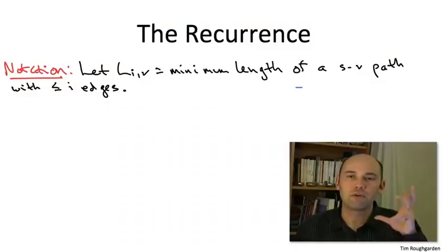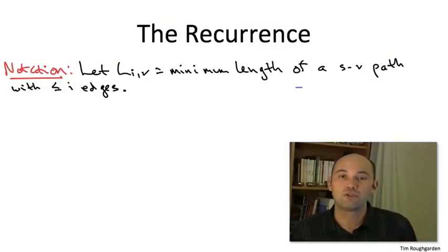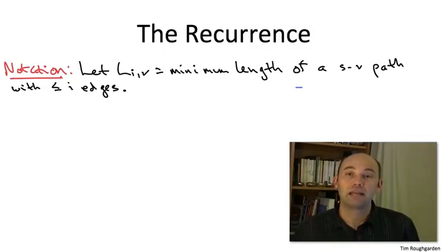A few details. First of all, remember that in the last video, we proved the optimal substructure lemma in general for general graph G, which may indeed have negative cycles.